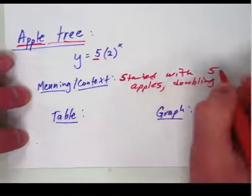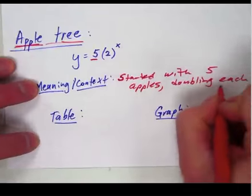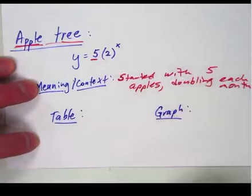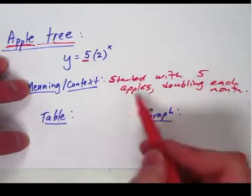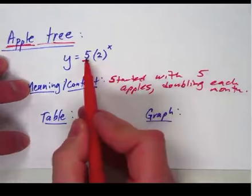We'll say it's doubling the number of apples each month. Doubling each month. And that would be our context. Started with 5 apples, it doubles every month. It can be represented by 5 times 2 to the x.